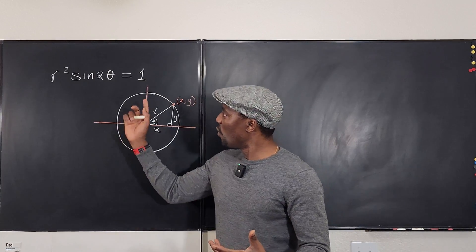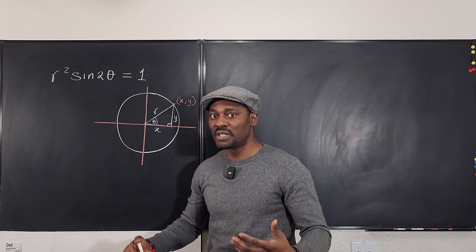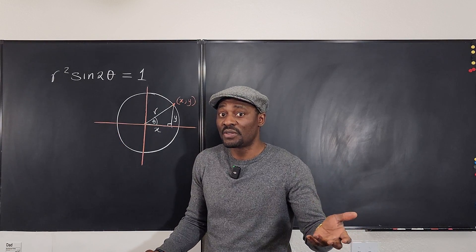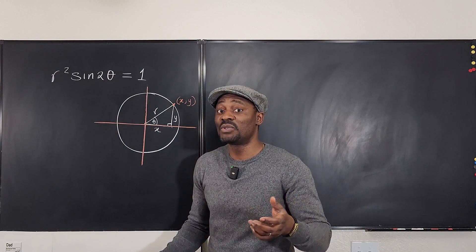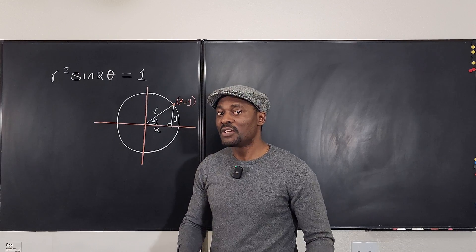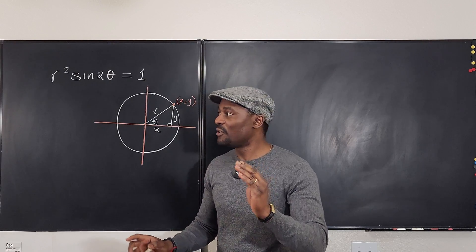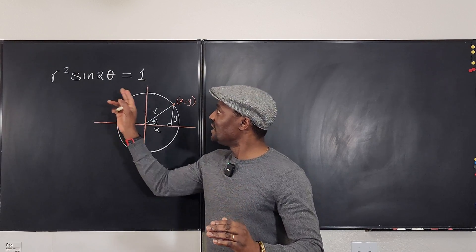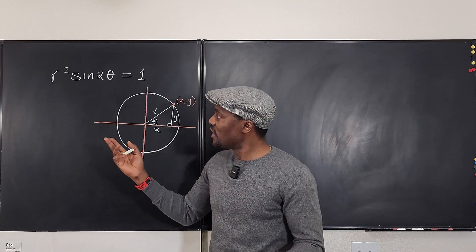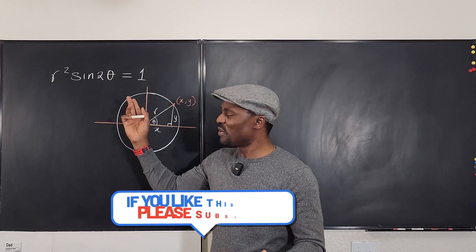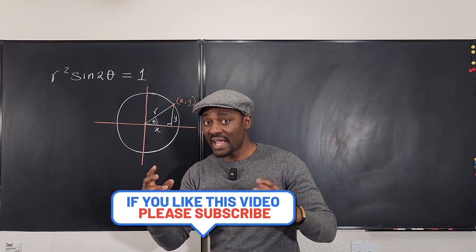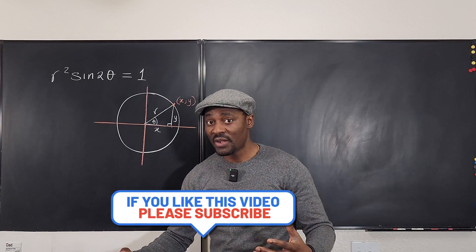What you see on the board is a representation of a typical function that's written in terms of x and y. The assignment is to identify what that function is — you want to know what this would be if we wrote it in terms of x and y.